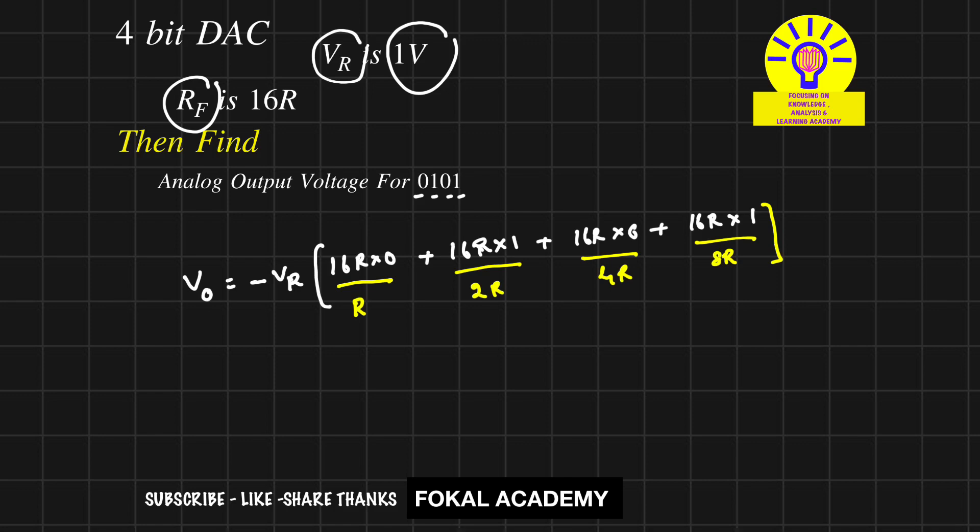Now substitute VR in this equation. Then we get minus 1 into and here 0 by anything is 0. Here also 0 by anything is 0. So in this R cancels, here R cancels, and here it becomes 2 ones, 2 eights. So 8 plus 2. So that's equal to minus 10 volts.